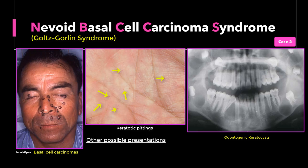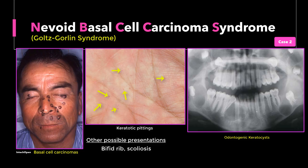Some other manifestations will include intracranial calcification of the midline falx cerebri, dermal calcinosis, fibromas of the ovaries in females, malignant medulloblastoma of the cerebellum, and various deformities of the skeletal system such as the infamous bifurcated or forked rib.